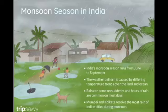The monsoon season runs from June to September. The weather pattern is caused by differing temperature trends over the land and ocean. Rain can come suddenly and hours of rain are common on most days. Mumbai and Kolkata receive the most rain of Indian cities during the monsoon season.